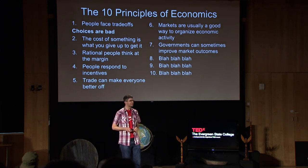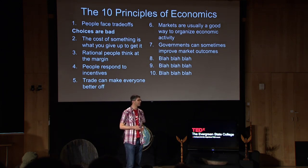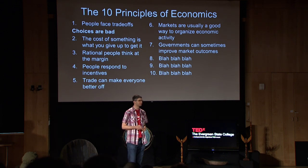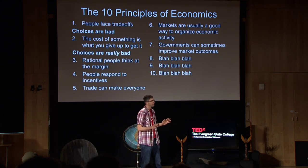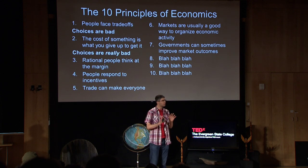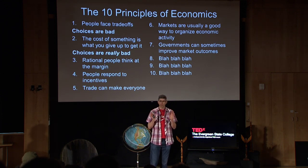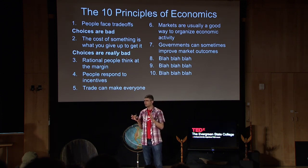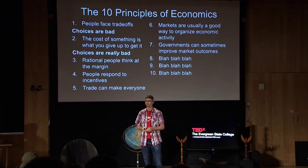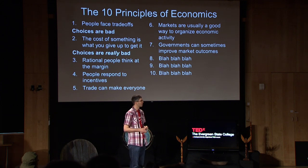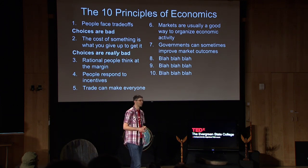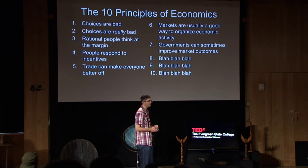If you don't understand that, take a look at the second principle: the cost of something is what you give up to get it. Translation: choices are really bad. I'm going to stop beating around the bush with you folks. If you don't understand why choices are bad, you're probably stupid. Moving on. Principle number three: rational people think at the margin. Translation: people are stupid.